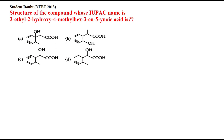Hello students, this question appeared in NEET 2013 and is also a student doubt. In this question, let's read the statement first: the structure of the compound whose IUPAC name is 3-ethyl-2-hydroxy-4-methyl-hex-3-en-5-ynoic acid. You are having four options and out of these four options you have to select the correct one.